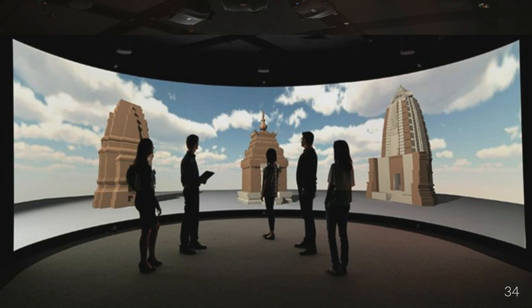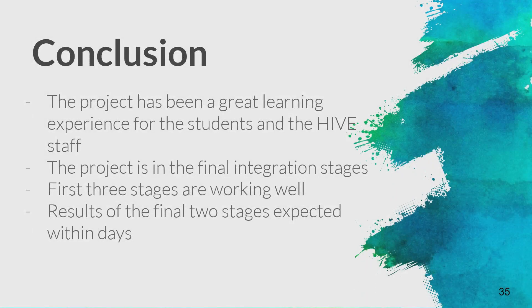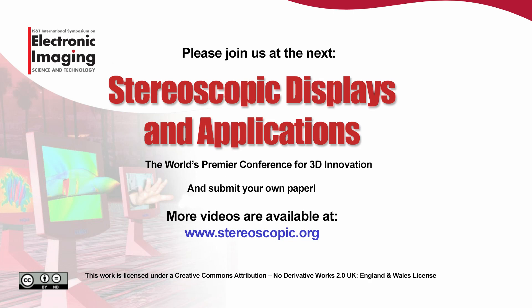Our aim is to have completely rectilinear geometry right across the display. That'll never be perfect for every viewing point in front of the display, but for a large audience you'd put that optimal point in the middle of the audience to minimise distortion across the population. The distortion is fairly small, but you do want to optimise it. In conclusion, it's been a great learning experience for the students and for Josh and myself as supervisors. The project is in its final integration stages — the first three stages are working well, as you can see from those images, and the final two stages are expected within days.